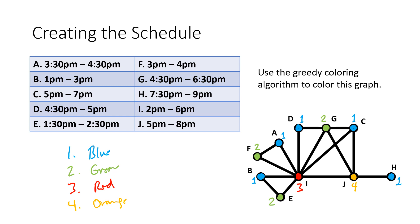What this tells us for scheduling is that we only need four rooms. Events A, B, C, D, and H can all go in the blue room, room number one. Events E, F, and G have to go in the green room, room number two. Event I has to go in room number three, and event J has to go in room number four. We don't know this is the most efficient way, but it guarantees that no two overlapping events would be in the same room.